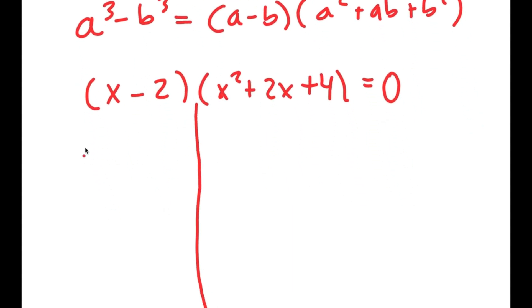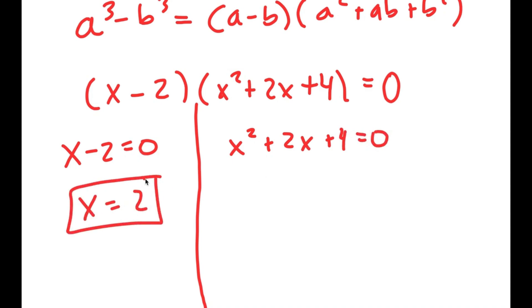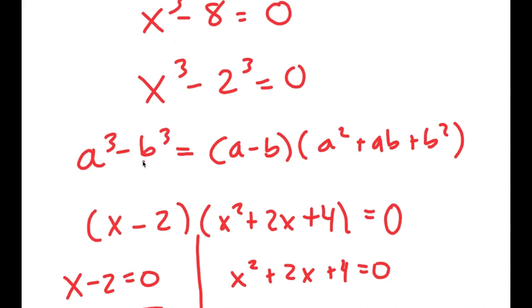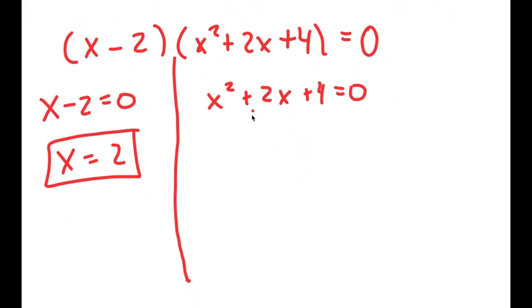So now I get two equations: x minus 2 equals 0, and x squared plus 2x plus 4 equals 0. For x minus 2 equals 0, I get x equals 2, which was the solution we already got. But now we have a whole other equation with two more solutions, because it's a quadratic equation.